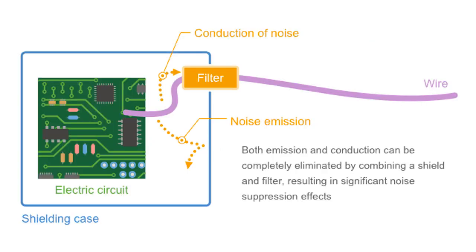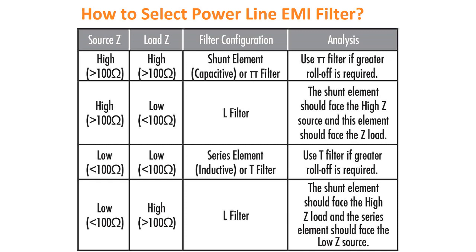Such a simple passive filter plays a role of two-way noise suppression that it is widely applied in various electronic devices. Now we discuss how to select an EMI power line filter. What should be taken into considerations?